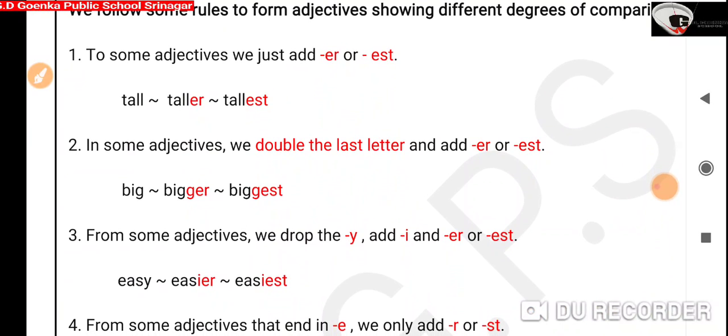In the second rule, in some adjectives, we double the last letter and then add -er and -est. For example, big is in positive degree. To make it comparative, we add another g and then -er. And for superlative, again we add another g and then -est. Big, bigger, biggest.